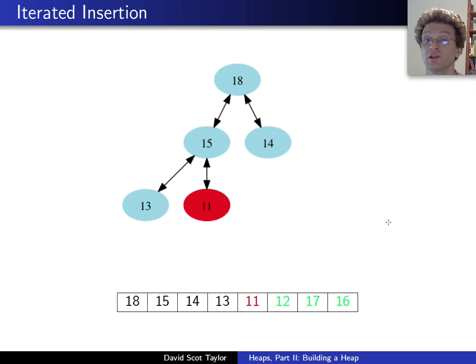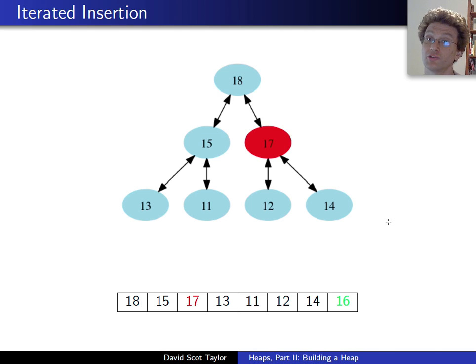Next I insert 11. In this case, 11 is not bigger than 15, so it just stops, it doesn't have to move up at all. Then we go to 12. 12 is smaller than 14, so it doesn't have to move up at all. 17 is bigger than 14, it compares against 14, it moves up. 17 compares against 18, its parent, it's smaller than its parent, so it stops. And then I insert a 16. 16 moves up for a while, and finally 16 compares against 18, and it's smaller, so it stops.